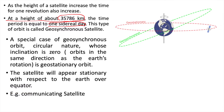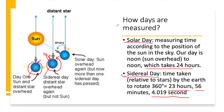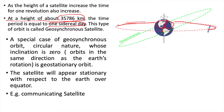At 35,786 km, the time taken by the Earth to rotate on its axis — the sidereal day — equals the satellite's orbital period: 23 hours, 56 minutes, and 4.019 seconds to complete one revolution. This type of orbit is called a geosynchronous orbit, and the satellite is called a geosynchronous satellite, because it takes almost the same time as the Earth to complete one rotation on its axis.